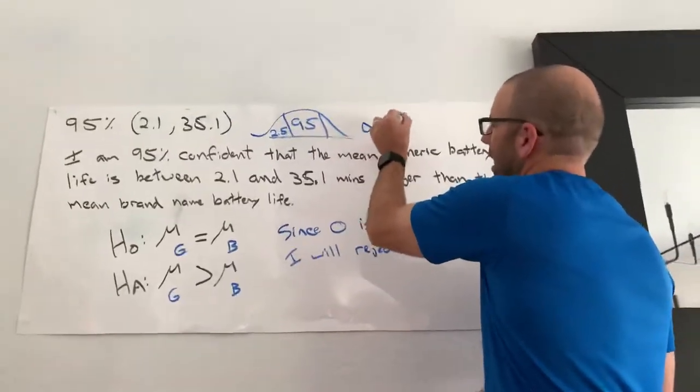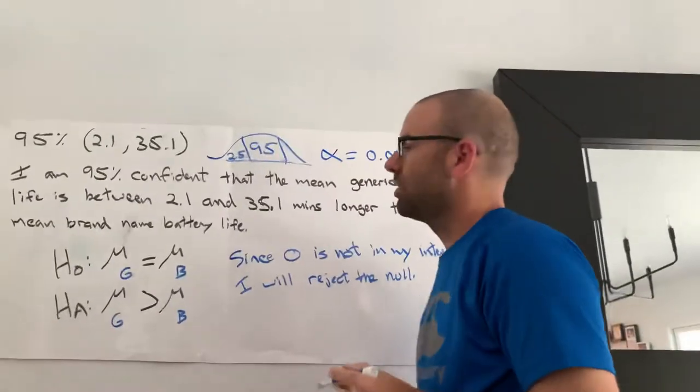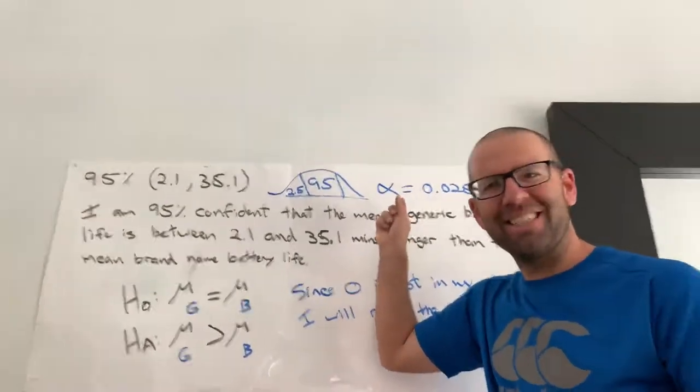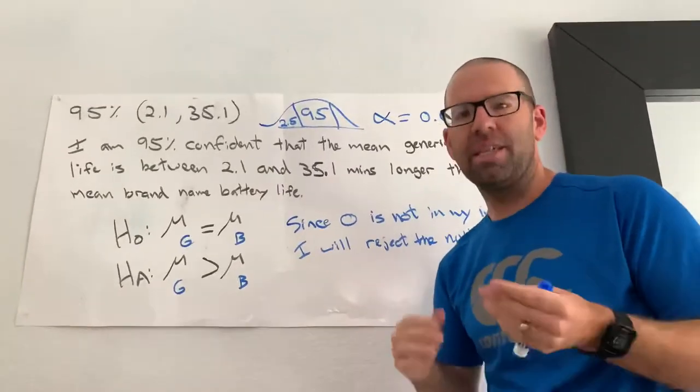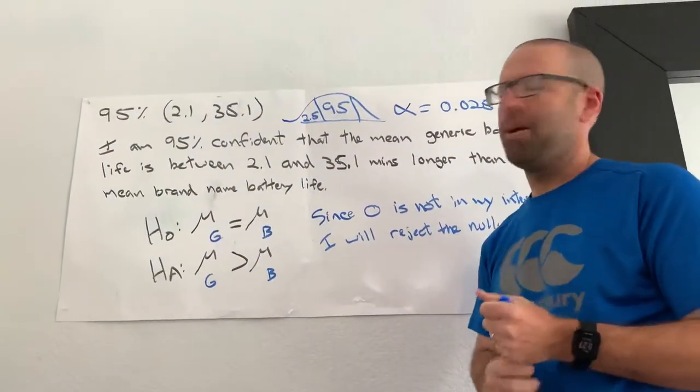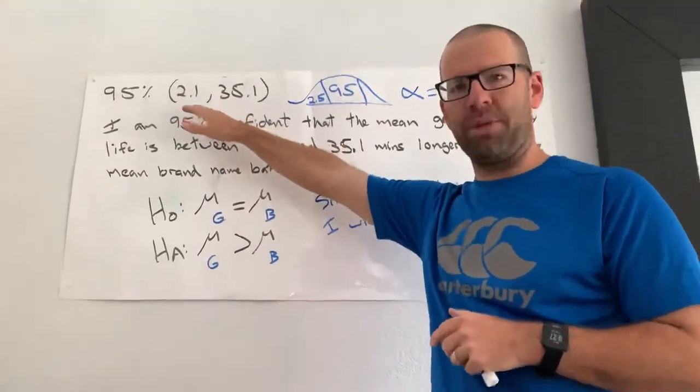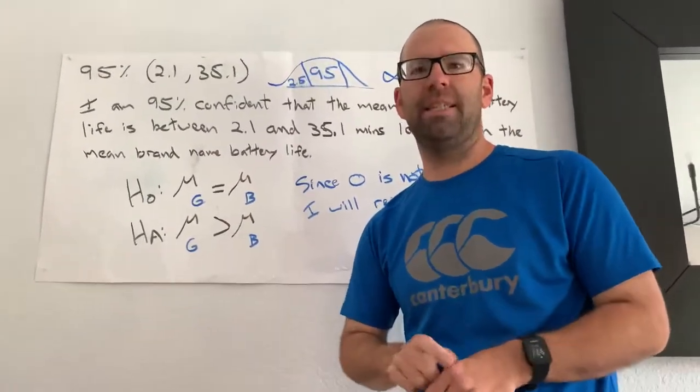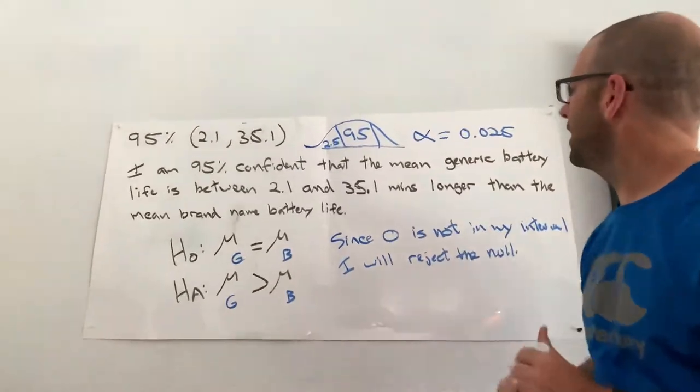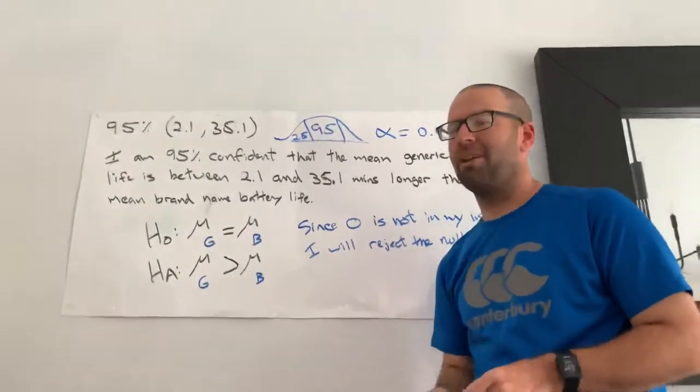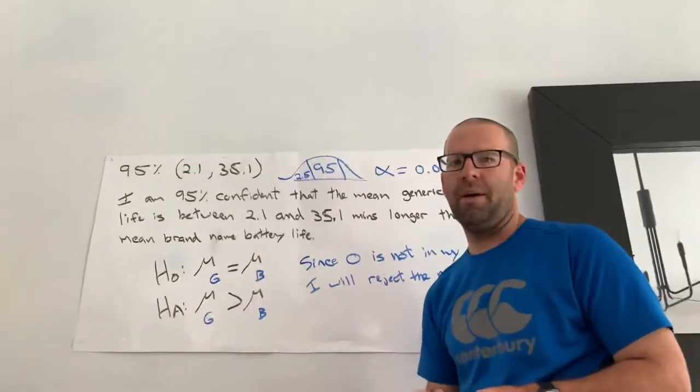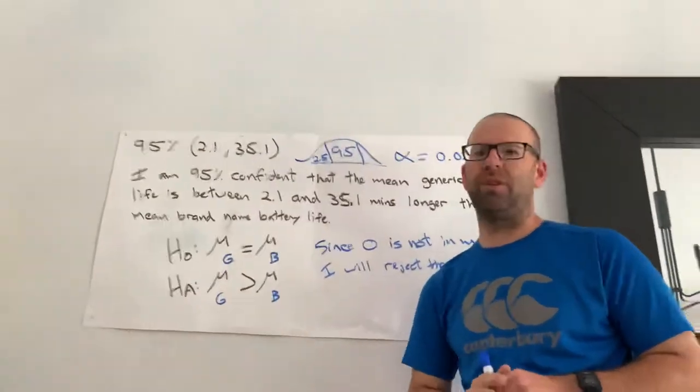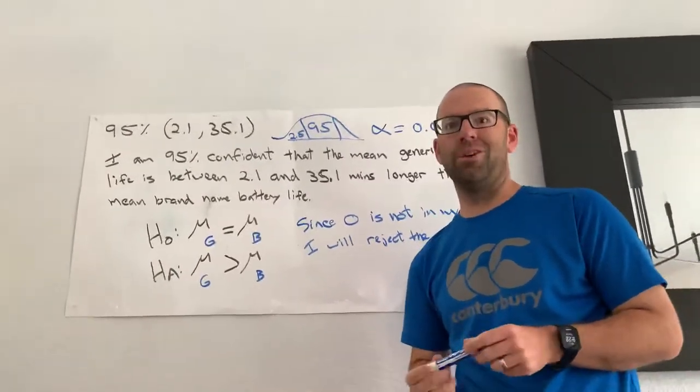My alpha, my corresponding alpha is going to be two and a half percent. So when I perform a hypothesis test, I know that my P value is going to be less than two and a half percent because I rejected at 95%, I rejected the null, which means I'm also going to reject the null when I perform a hypothesis test using P values. And since the corresponding alpha is two and a half percent, I know that my P value is going to be under two and a half percent. And it's not even going to be close because zero is not even close, which means my P value isn't even going to be close to two and a half percent. It's going to be sufficiently under two and a half percent.